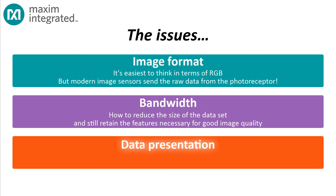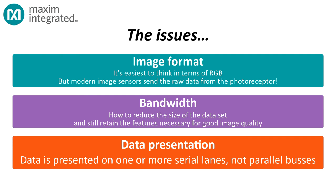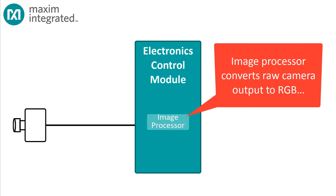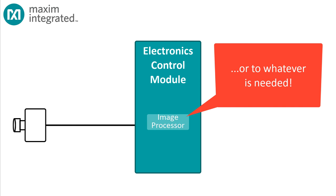The third issue with camera interfacing is that of data presentation. It wasn't long ago that a VGA quality camera would present its data as parallel RGB, but those parallel interfaces don't make a lot of sense for modern, high-resolution image sensors. Current camera sensors present their data on multiple CSI lanes that contain the raw output from the photoreceptor sites. It's then up to the image processor to convert that to RGB space, or to YUV space, or whatever color space is needed by the system.